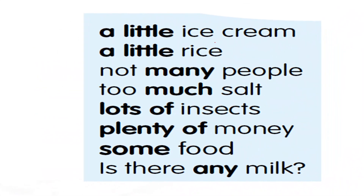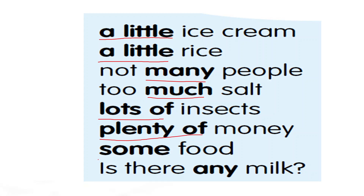A little ice cream — a little is the adjective of quantity, which is not showing the exact number but giving the idea about the number. Not many people — many. Too much salt — much. Lots of insects — lots of. Plenty of money — plenty of. Some food — some. And is there any milk — any. These words — a little, many, much, lots of, plenty of, some, and any — are the adjectives of quantity in the sentences.